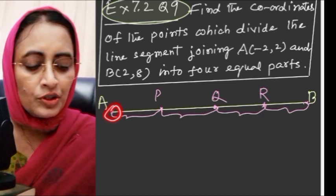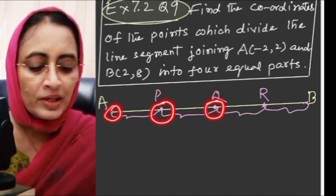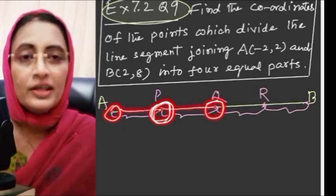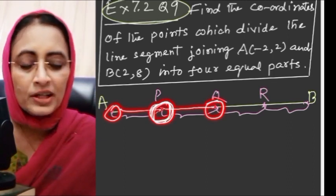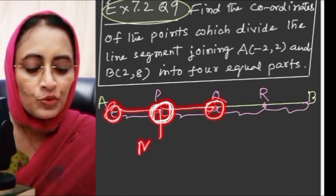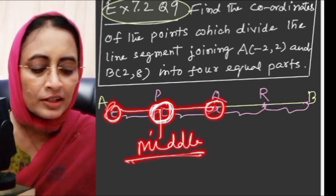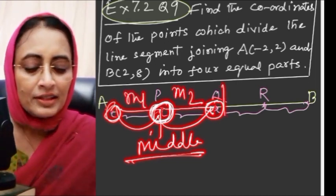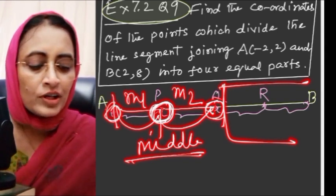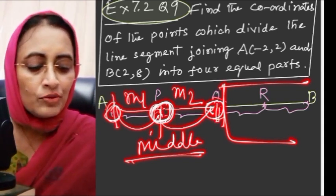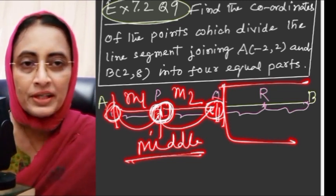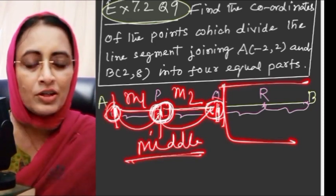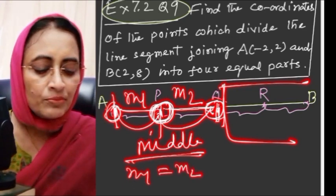Q is the midpoint of AB, and P is the midpoint of AQ, and R is the midpoint of QB. Since these are midpoints, they divide into equal parts. By section formula, if we know a coordinate point, and m1 and m2 are equal, then m1:m2 = 1:1.